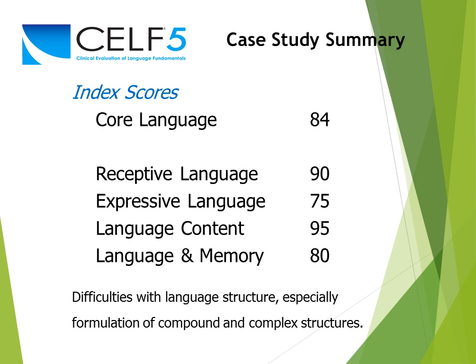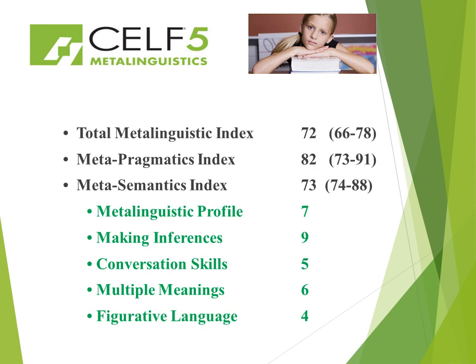When we do the CELF-5 Metalinguistics, we find that the metalinguistics index is 72 — well below normal. The metapragmatics index is 82, in the at-risk zone. The metasemantics index is 73. That means she certainly cannot stand back from the concrete level of interpretation, and she is indeed a candidate for intervention.